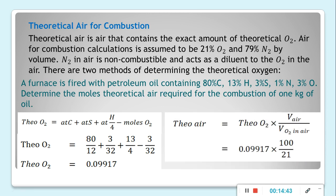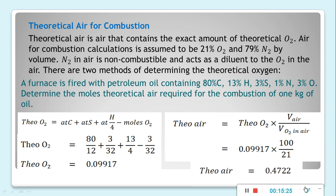To get the theoretical air, we multiply by the ratio of air volume to oxygen volume. Since air is 21% oxygen, we divide theoretical oxygen by 0.21: 0.09917 divided by 0.21 gives a theoretical air of 0.4722.